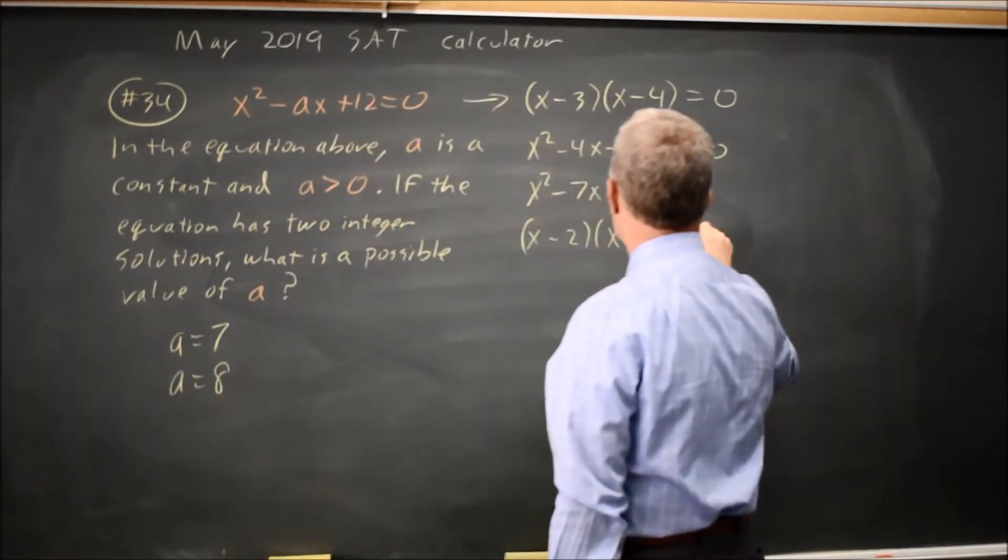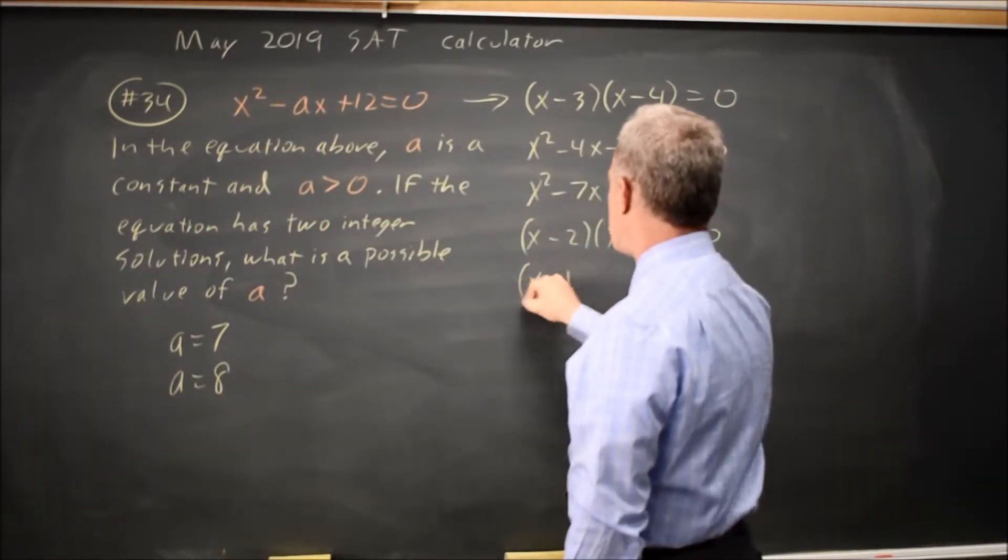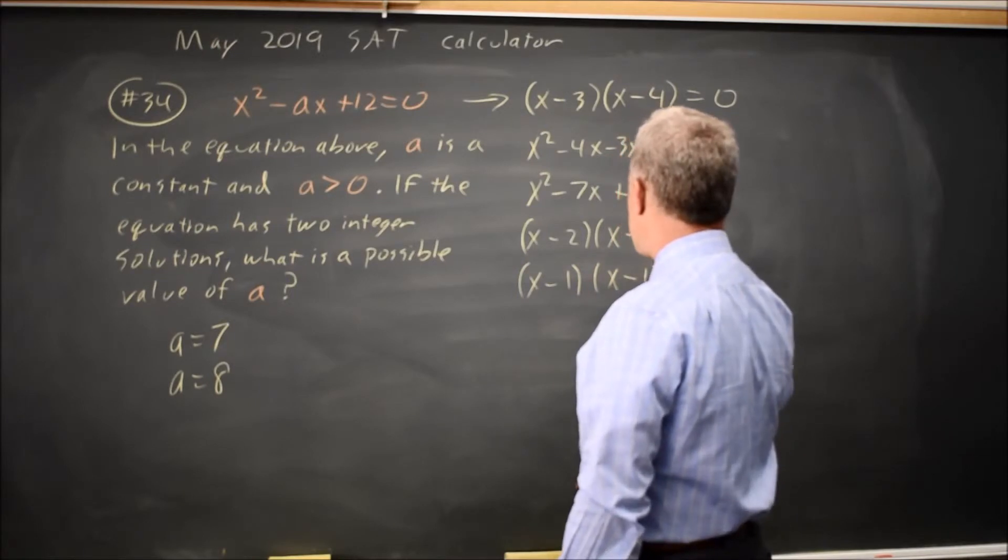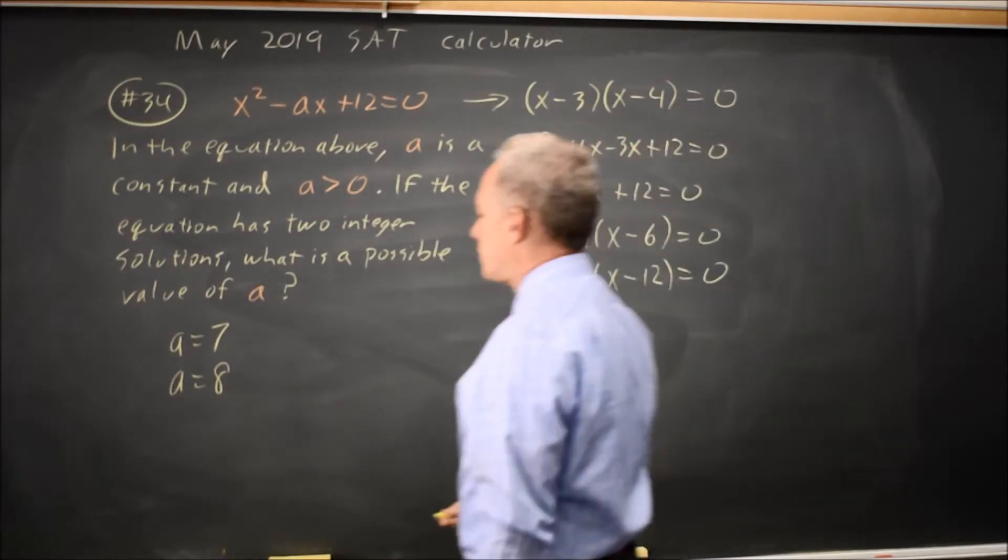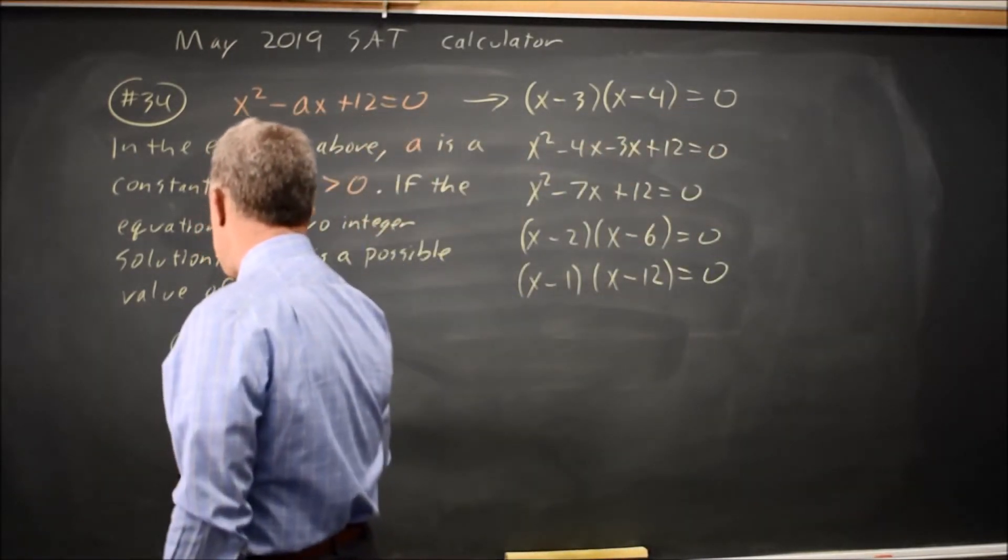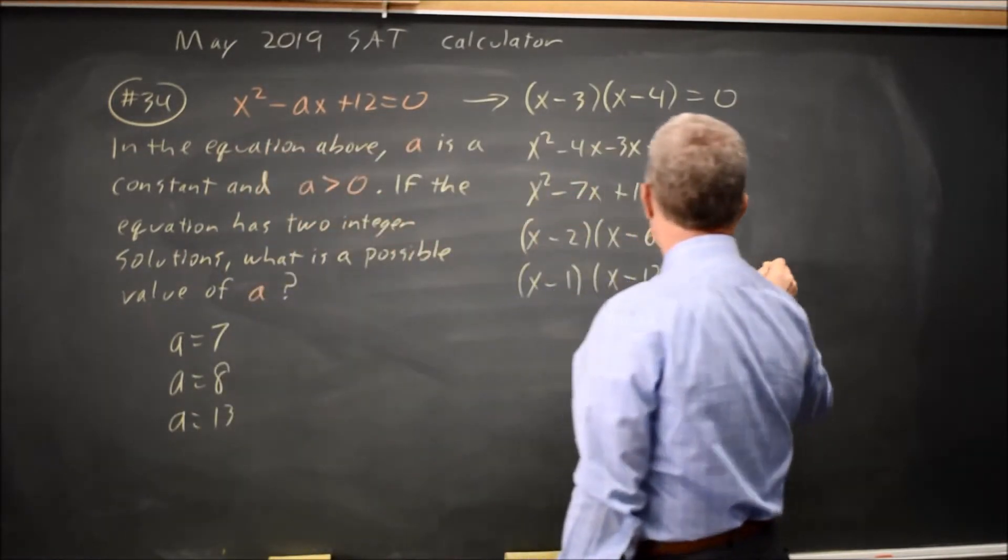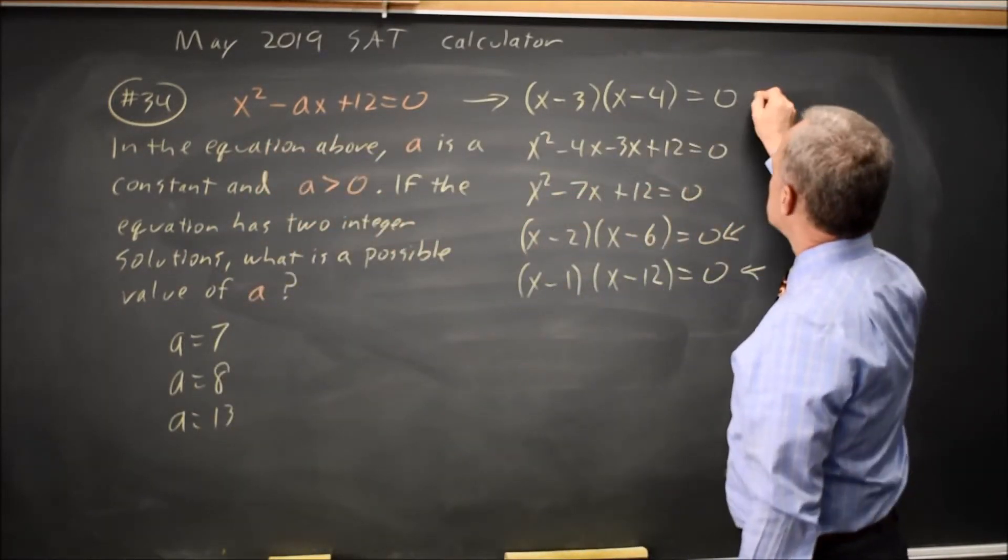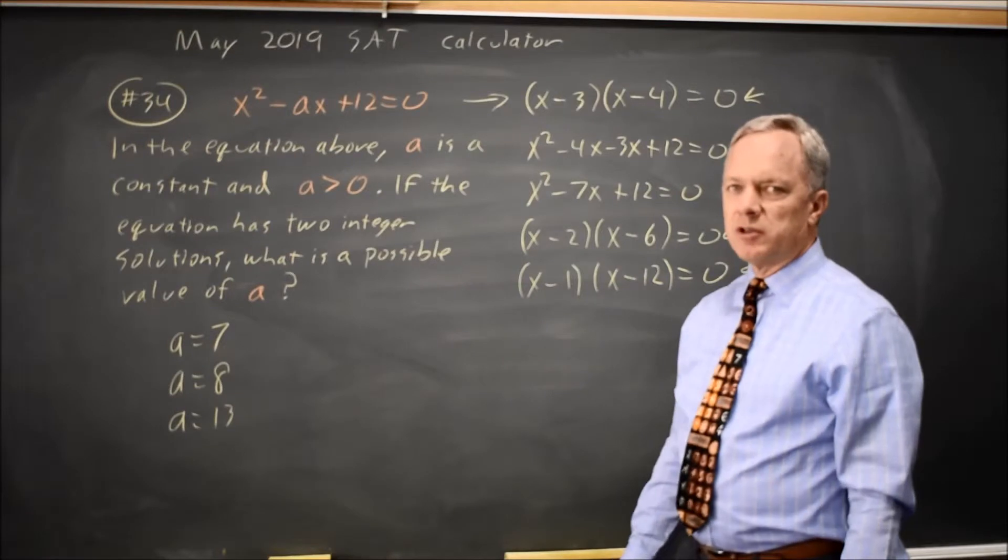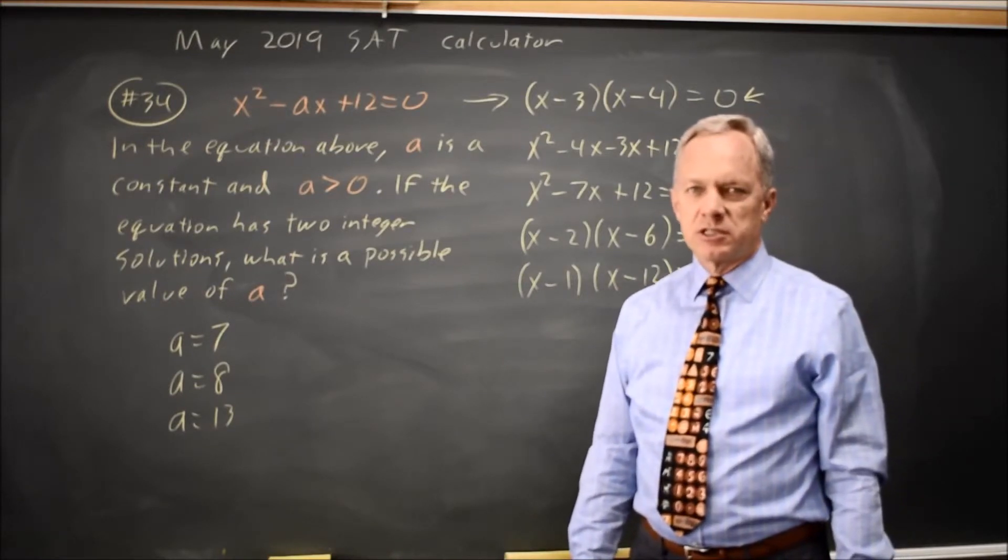Or I could have done X minus 1, X minus 12 equals 0, and that would give me A equals 13, because all three of the choices I showed will give you two integer solutions to the equation.